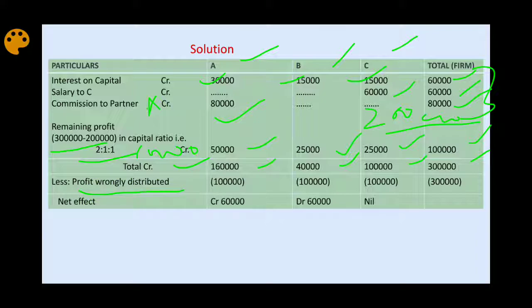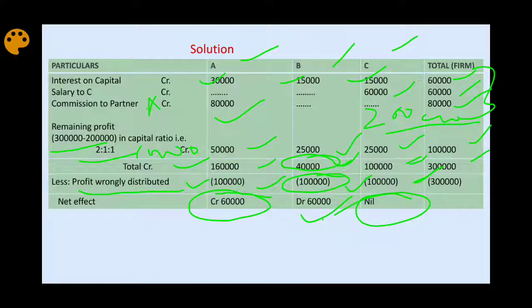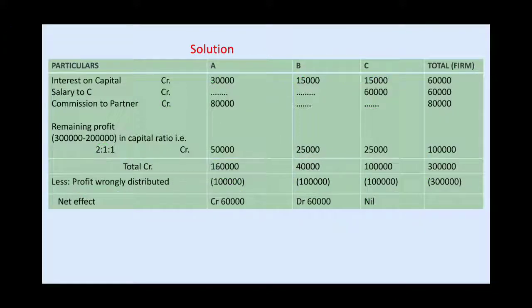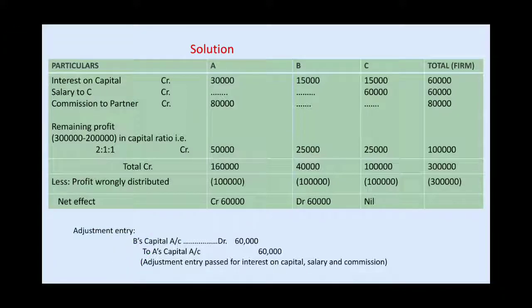Profit was wrongly distributed equally, so each partner received 1 lakh. Comparing: A should get 1,60,000 but received 1,00,000 — so A gets 60,000 more (credit A). B should get 40,000 but received 1,00,000 — so B gets 60,000 back (debit B). C should get 1,00,000 and received 1,00,000 — no adjustment needed. Adjustment entry: B's capital account debit 60,000 to A's capital account 60,000, for adjustment of interest on capital, salary, and commission.